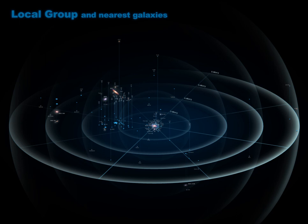Related structures include the local void, where the local sheet defines the wall of galaxies at one end of the void, and the Leo chain, a nearby cluster of galaxies opposite to the local void from the local sheet.